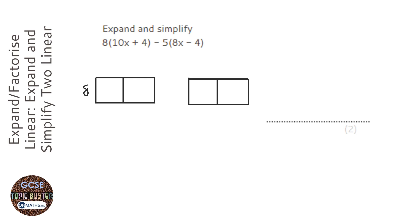So the first bracket is 8 times 10x plus 4, and the next one is minus 5—and that is so important that there's a minus there—times 8x minus 4.